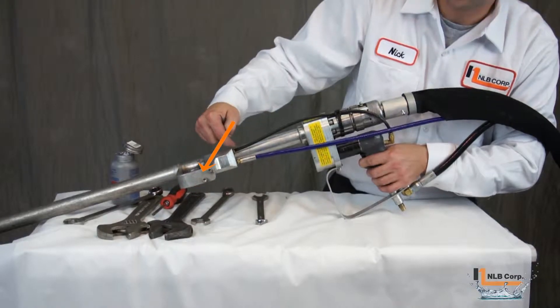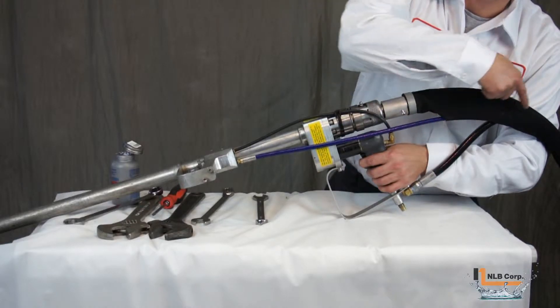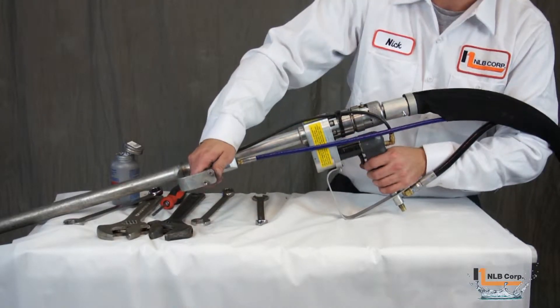Actuating the front trigger assembly allows air to travel down the blue signal line back to the bi-mode, causing high pressure water to travel through and then out of the hand lance.